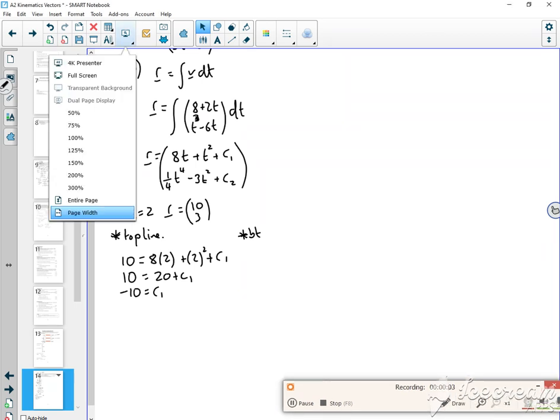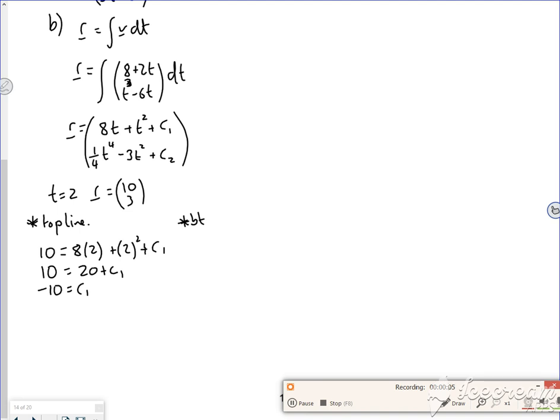Got caught out then, not watching the timer. Right, so let's look at the bottom line then. So I've said that 3 is the same as a quarter of 2 to the power 4 minus 3 times 2 squared plus C2.